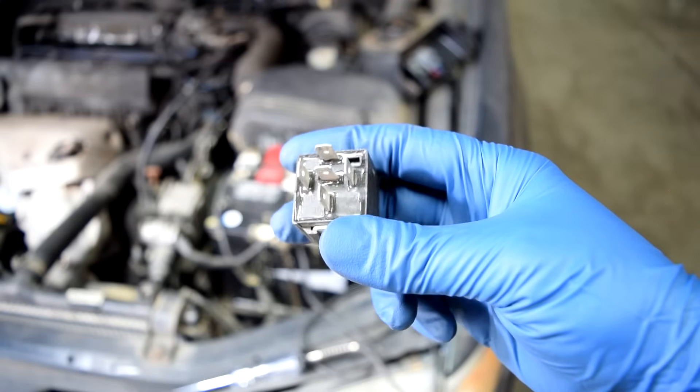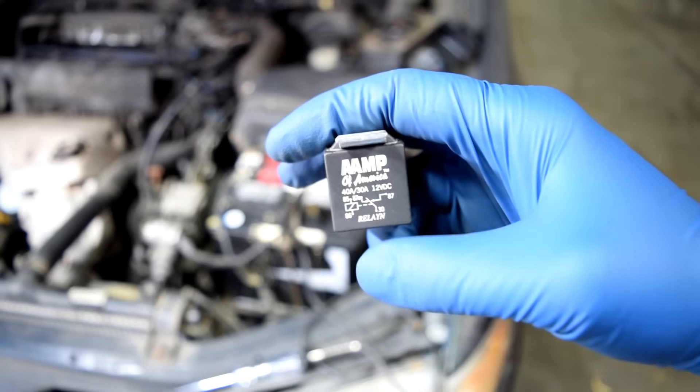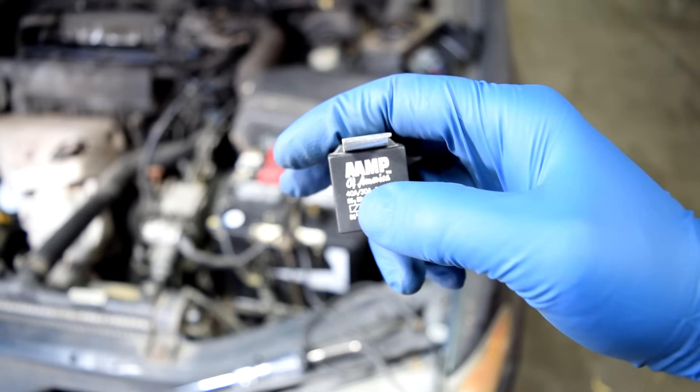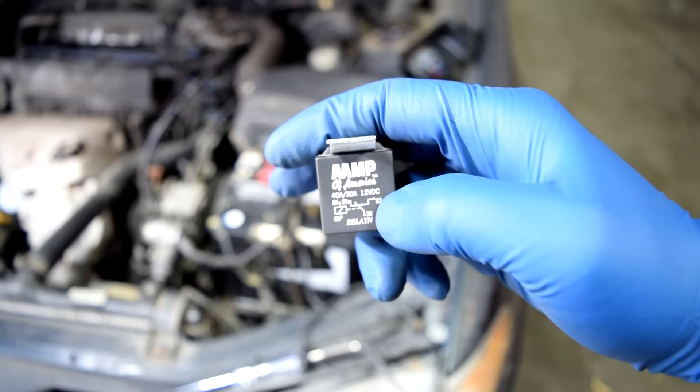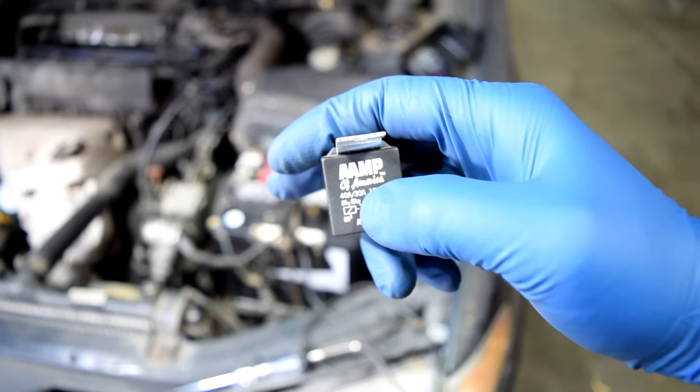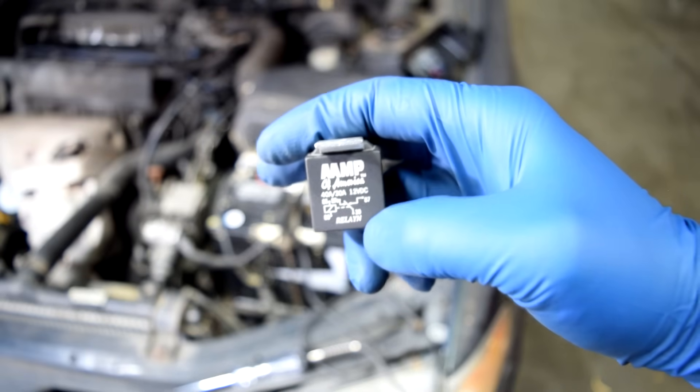Now if you have a 5 pin relay things are usually going to be just slightly different. As you can see on this diagram your control pins are going to be the same. The switch side you're going to have an extra pin that's 87A, but 30 and 87 are the terminals again you want to look for. Usually.